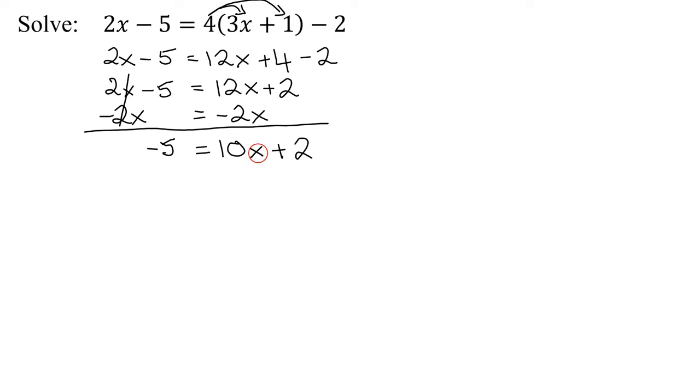So now my x's are all on the right. I need my constants over here. So I'm going to have to subtract 2 from both sides. And 2 minus 2 is 0. So on the right-hand side, I'm going to get 10x equals negative 5 added to a negative 2, which is negative 7.